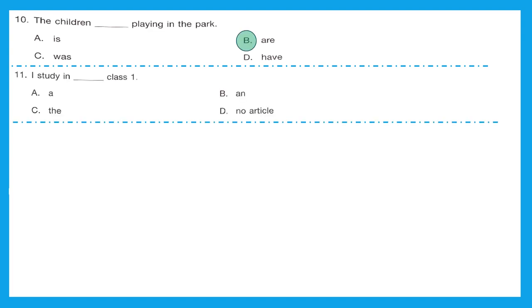Question 11, I study in dash class 1. Is it a, an, the or no article? Here we will not use any article. Rather, we will simply say I study in class 1. D is the right answer.